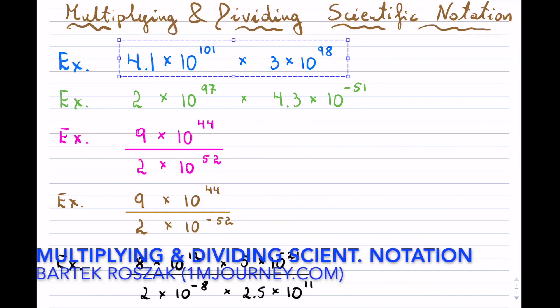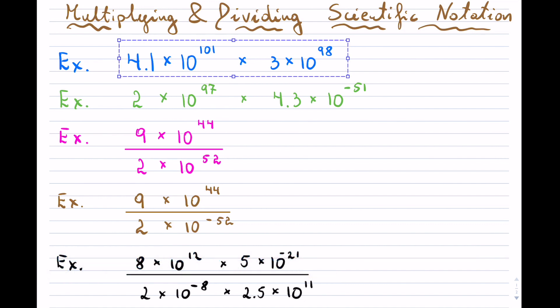Multiplying and dividing scientific notation. You see here five different examples which we will walk through. They'll get both multiplication and division, and then the last one combines the two. Let's try to see how do you approach these questions.